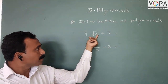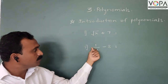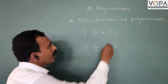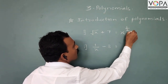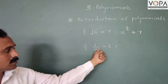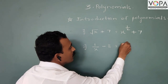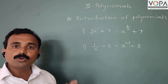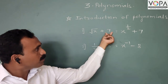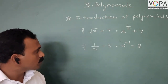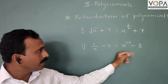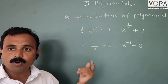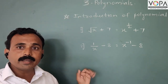Now here are examples that are not polynomials: the first is √x + 7, and the second is 1/x − 8. In the first example, √x means x raised to 1/2 plus 7. The index of x is 1/2, which is not a whole number, so √x + 7 is not a polynomial. In the second example, 1/x means x raised to −1, and −1 is not a whole number, so 1/x − 8 is also not a polynomial.